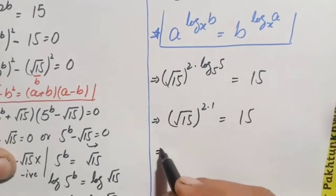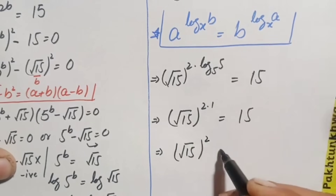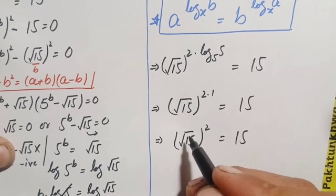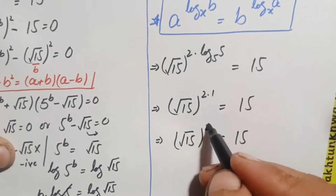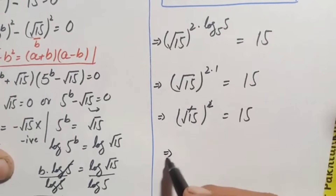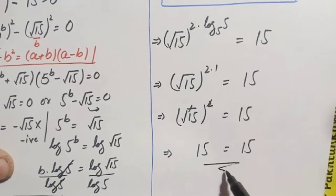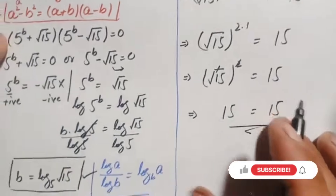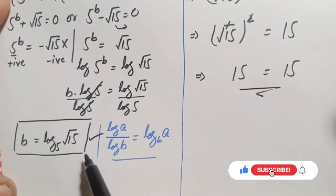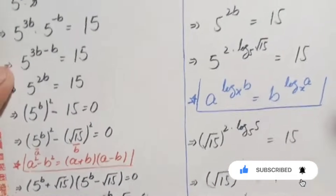This becomes square root of 15 raised to the power 2 times 1, which is simply 2, equals 15. Since square and square root are reciprocals of each other, they cancel, leaving only 15 on the left hand side. So 15 equals 15. Since both sides are equal, b equals log of square root of 15 with base 5 is the exact and correct value of b in this exponential math problem.